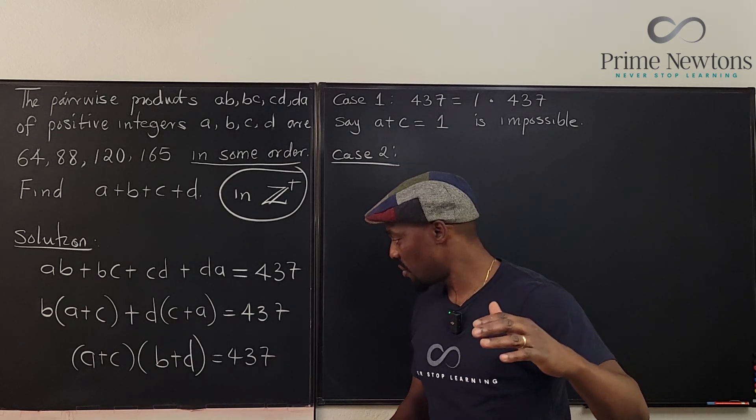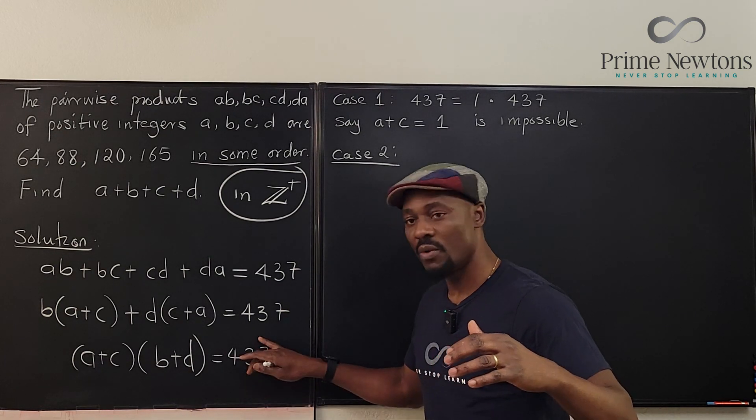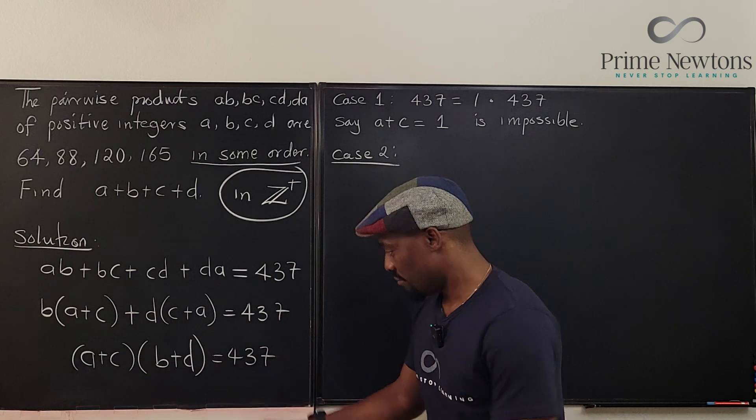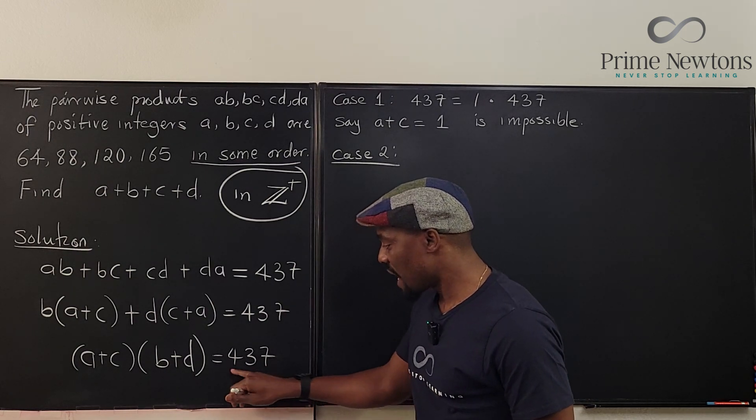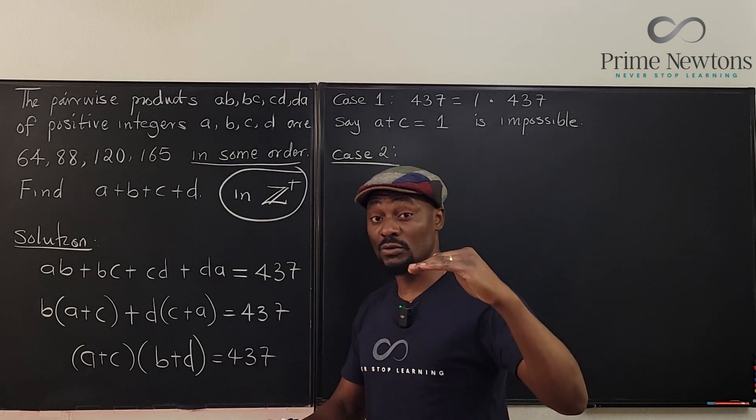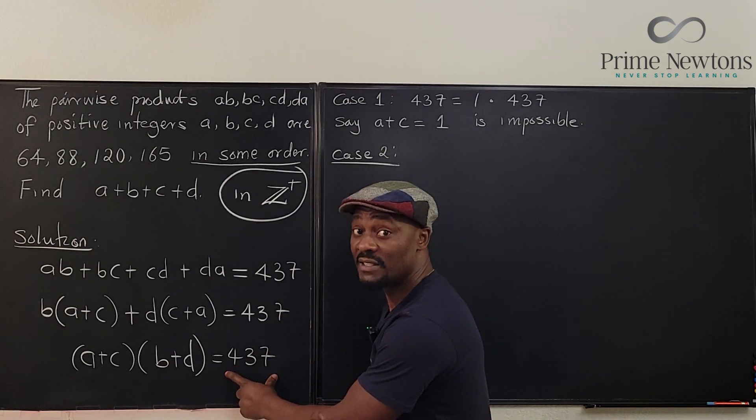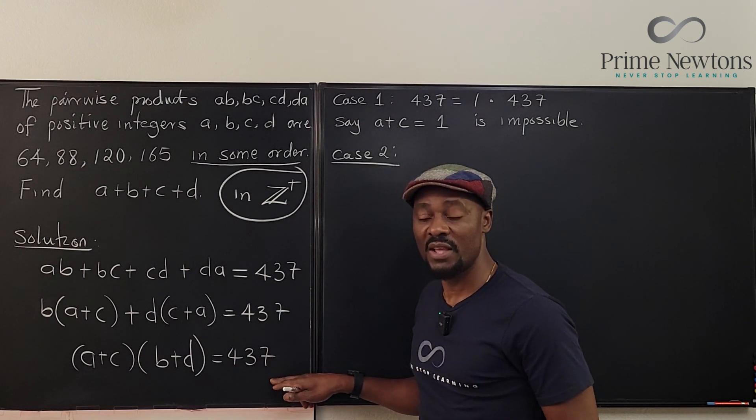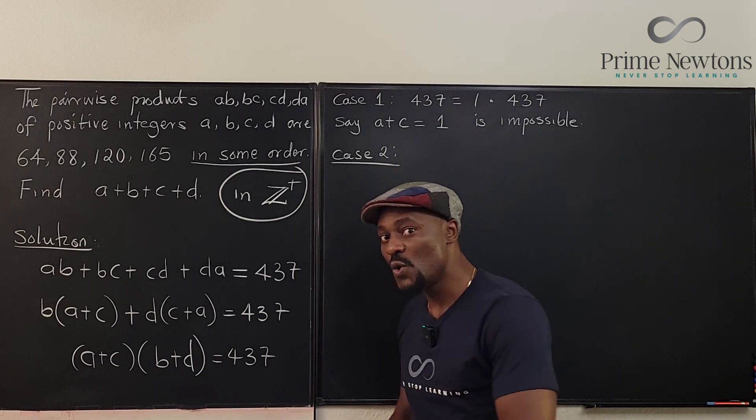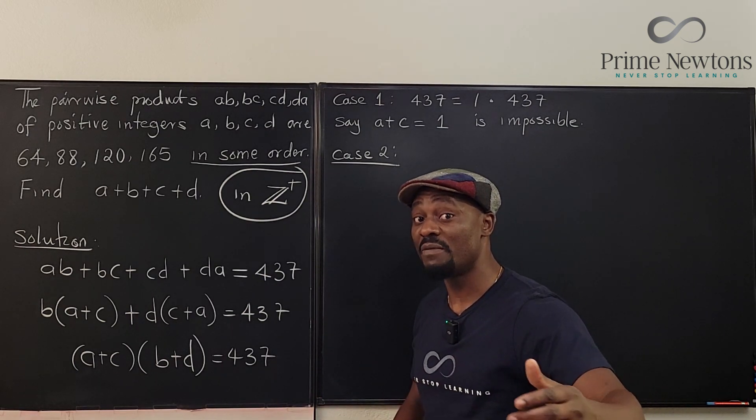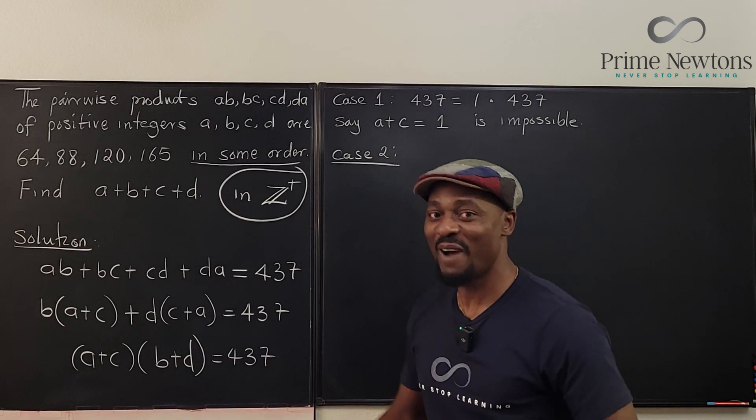For you to decide whether 437 is a prime number, you have to first look for the square root of 437. We know that the square root of 437 is between the square root of 400 and the square root of 441, which is 21. So the number has to be between 20 and 21. If you can check all numbers before you get to 21 and none of them divides this, then you say clearly this is a prime number. That's how you figure out whether a number is prime or not.